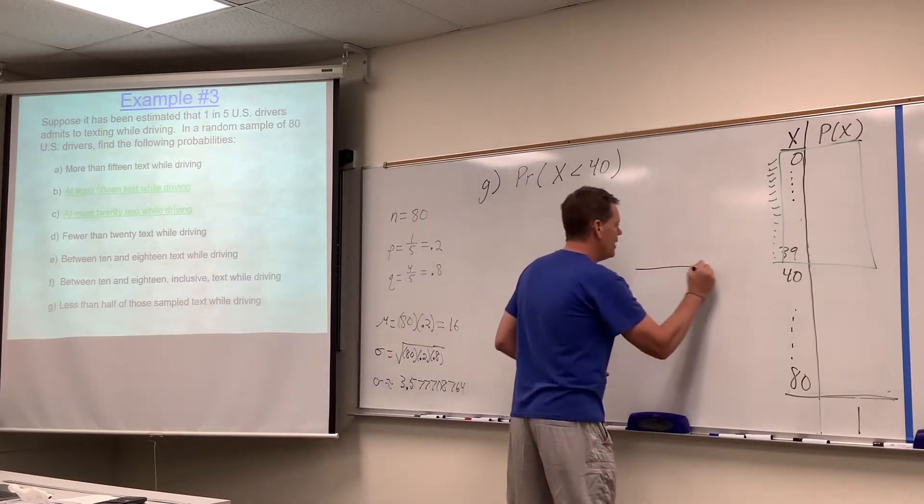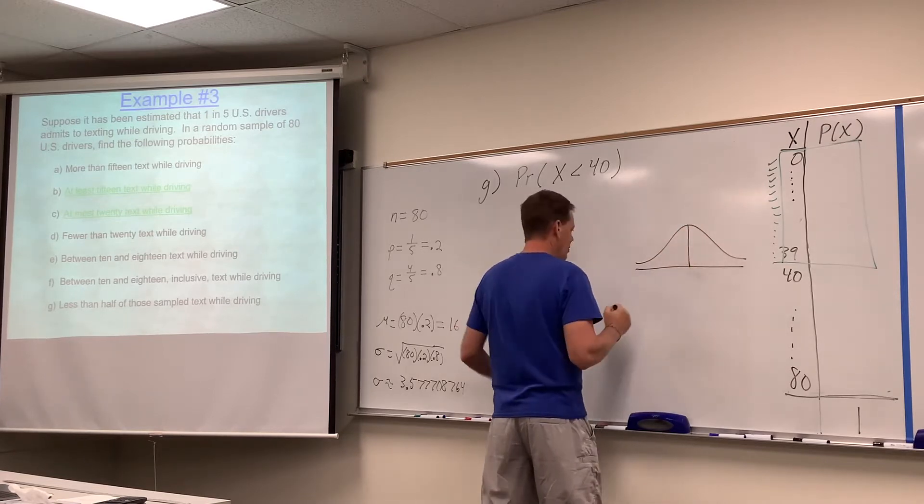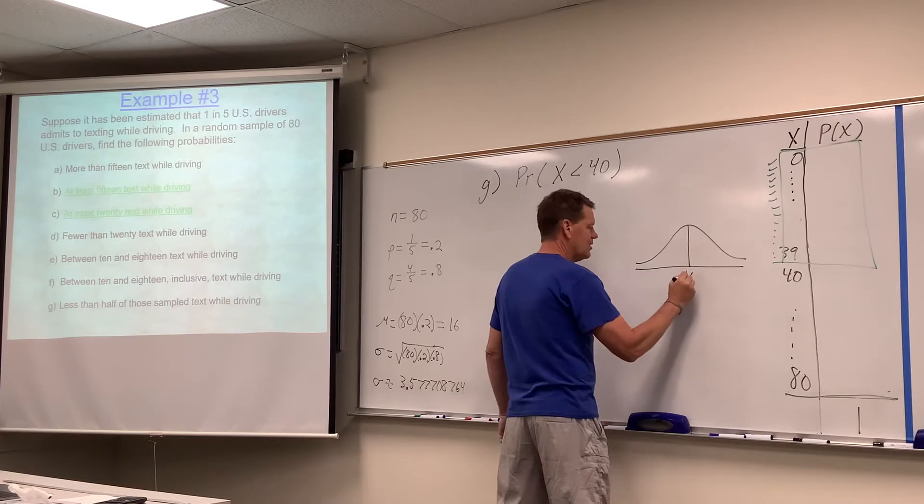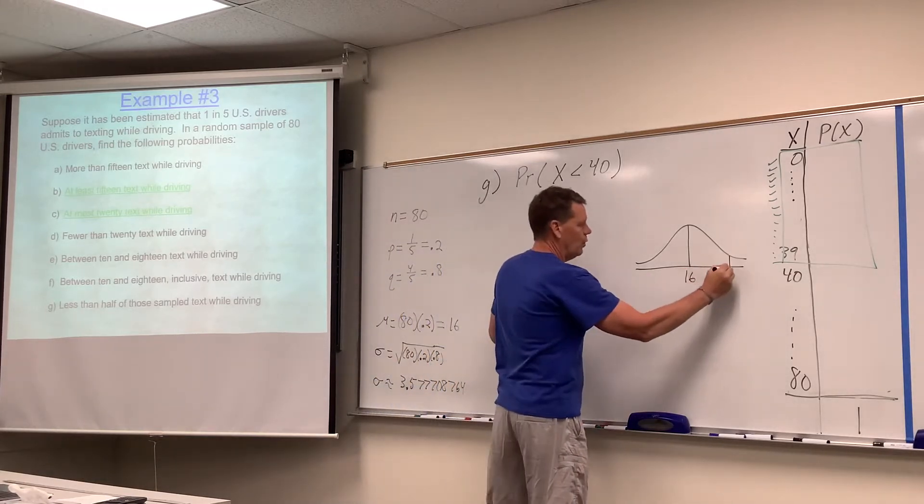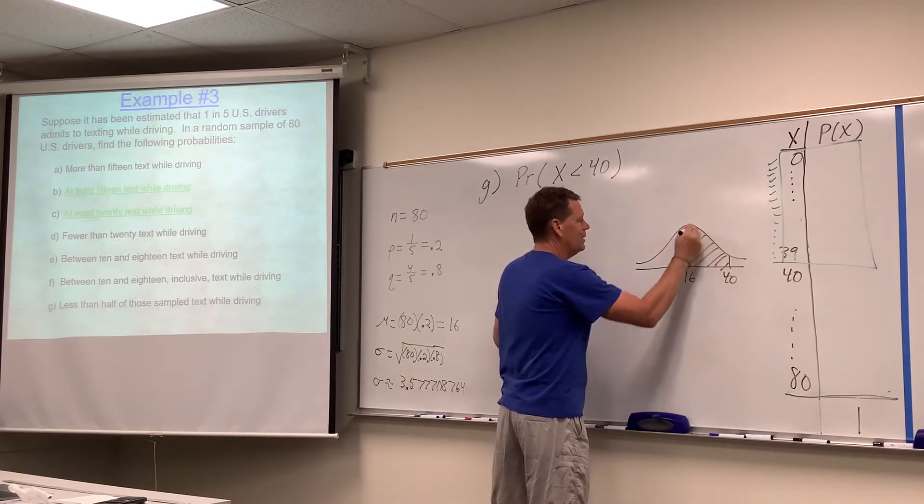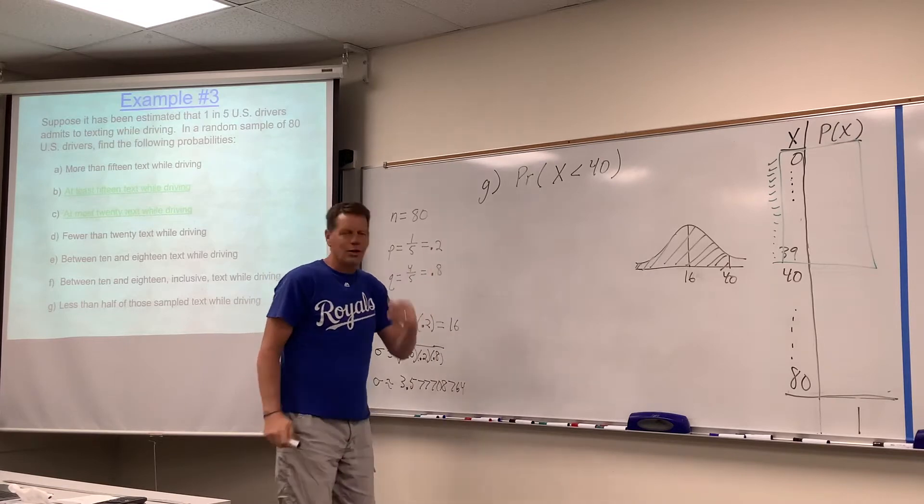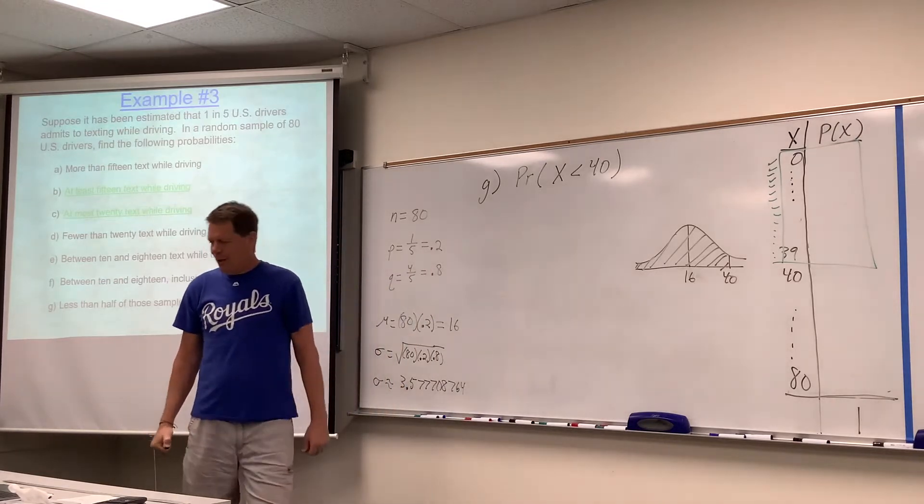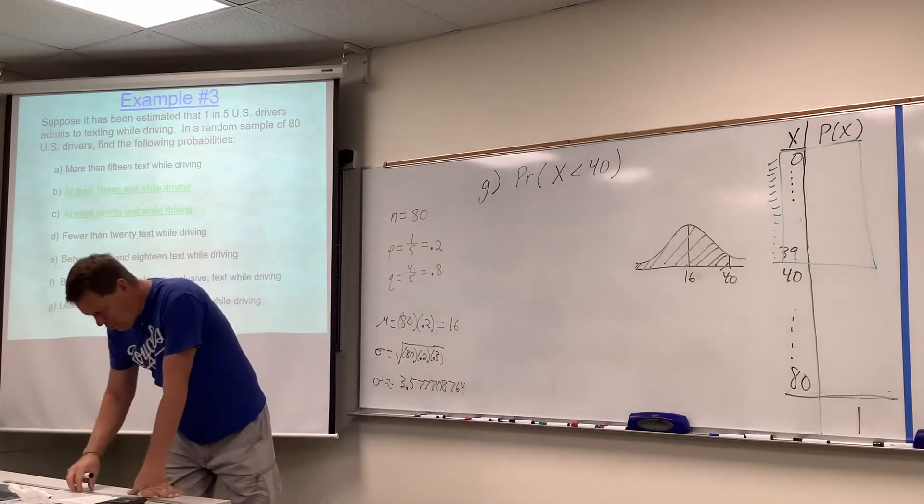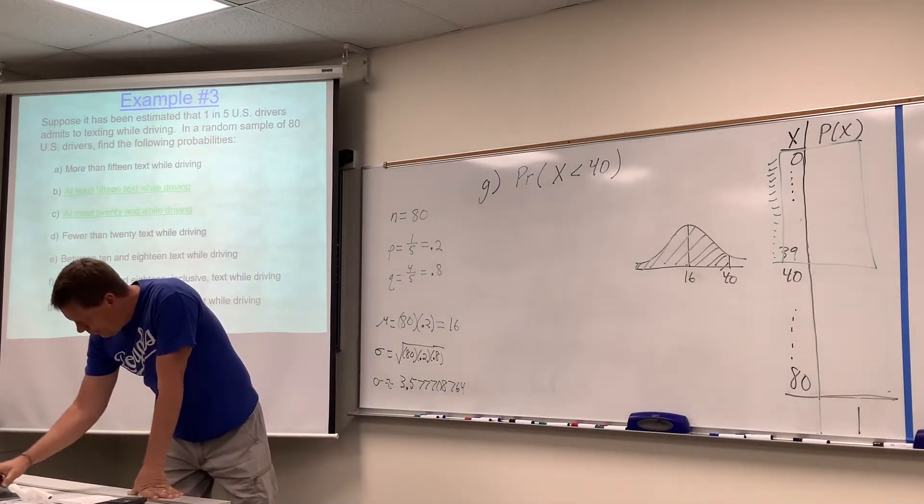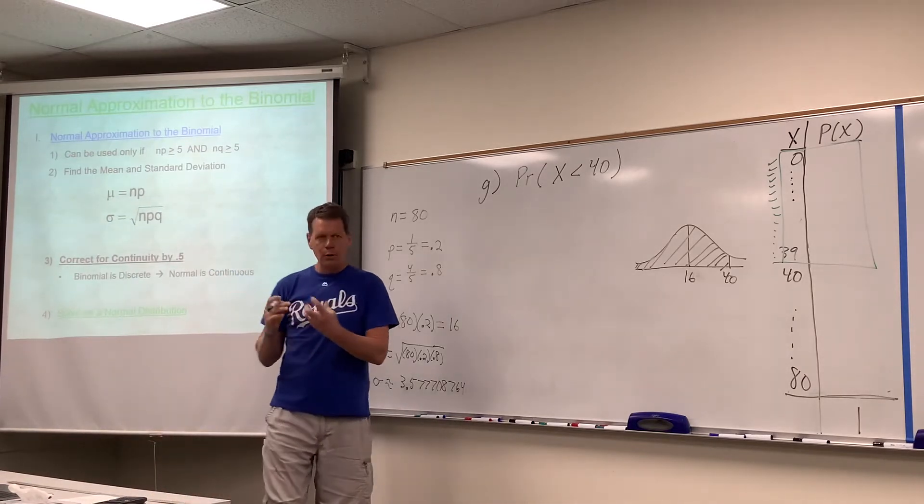We've already established in previous sections that we can use a bell curve with mean of 16. We're talking about less than 40. So important here - this is the step: correct for continuity by 0.5. That is in bold for a reason.